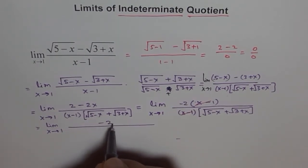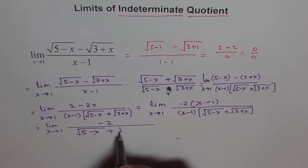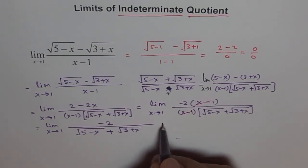And on the numerator minus 2 and in the denominator we are left with square root of 5 minus x plus square root of 3 plus x. Now we can substitute 1 and get our answer.